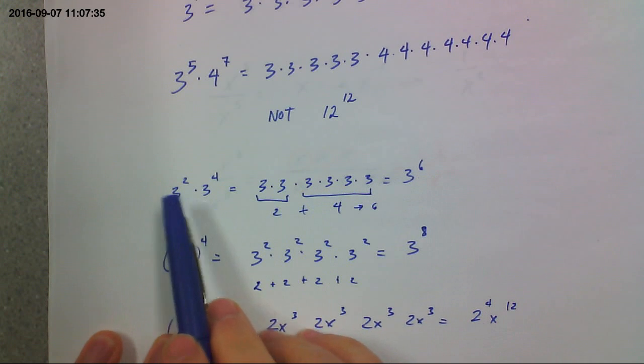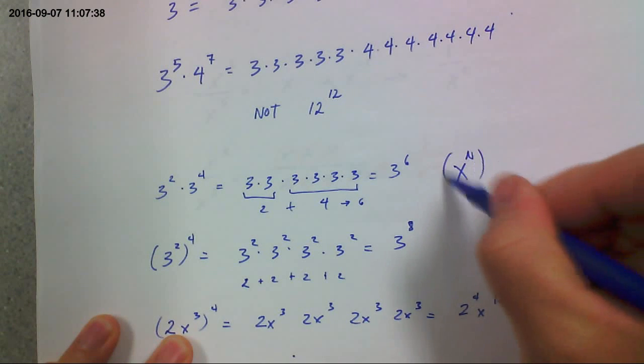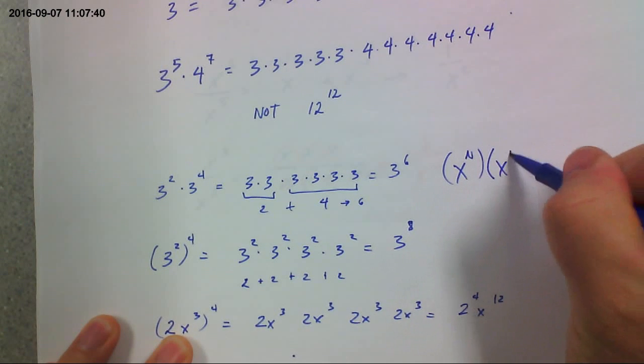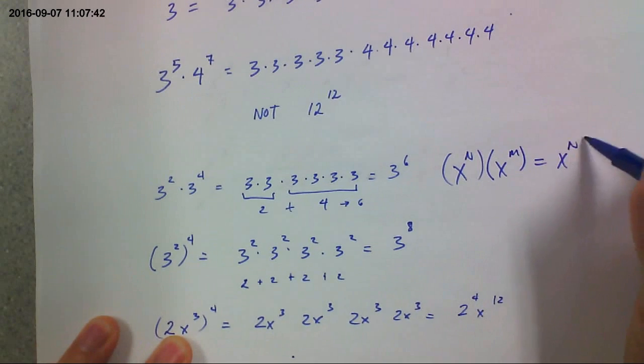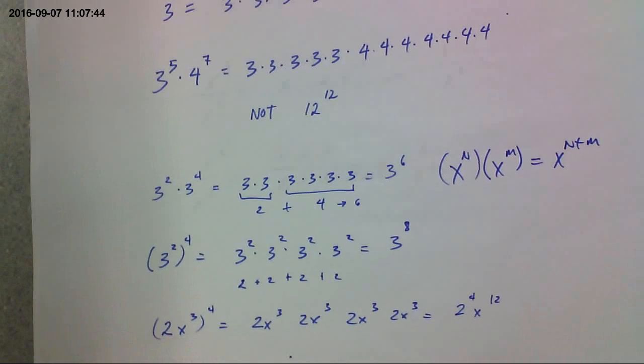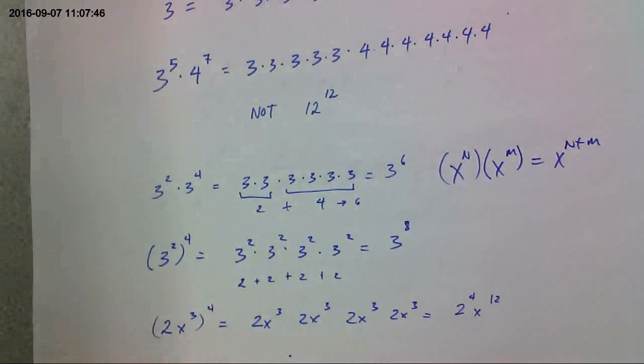So the shortcut is that if you had something like this, that that's x to the n plus n. Okay? So that's if the base is the same, you can add the exponents.